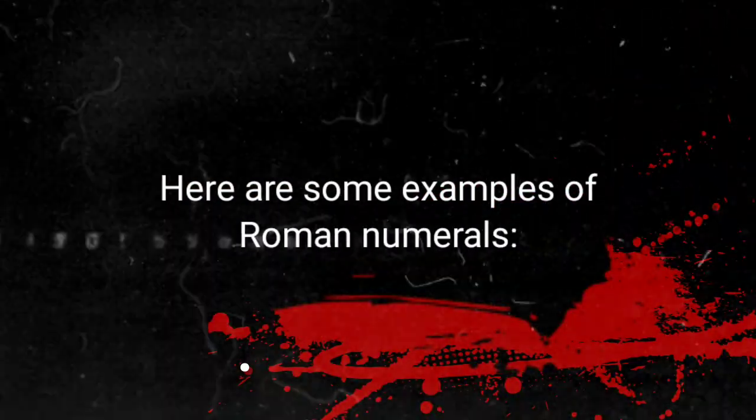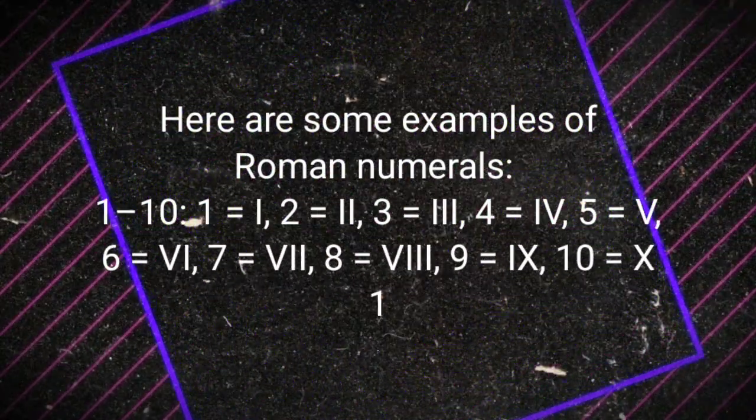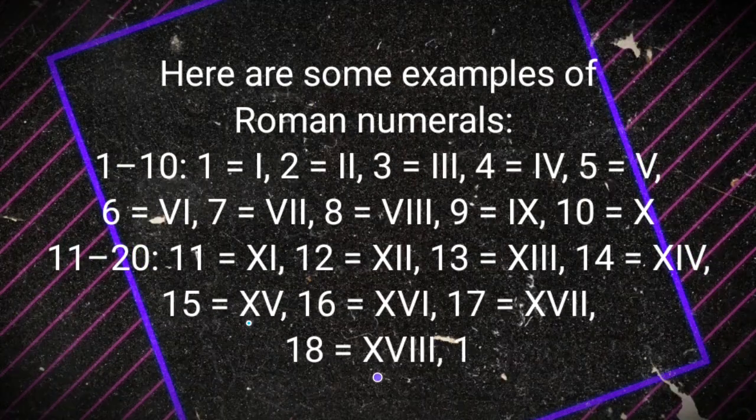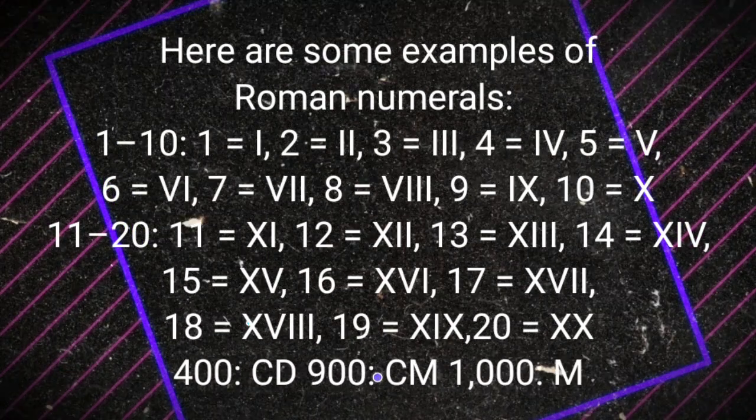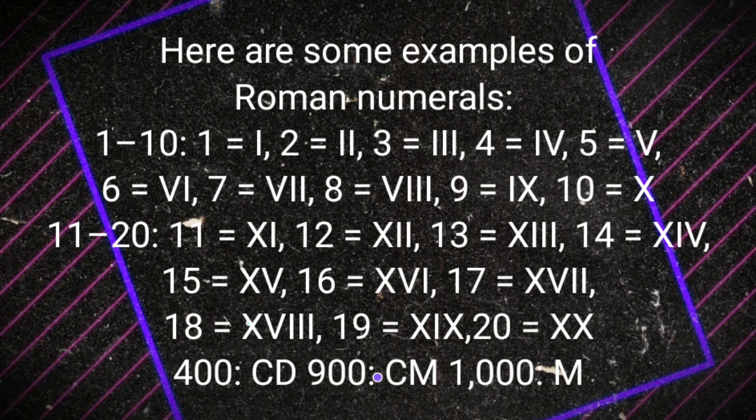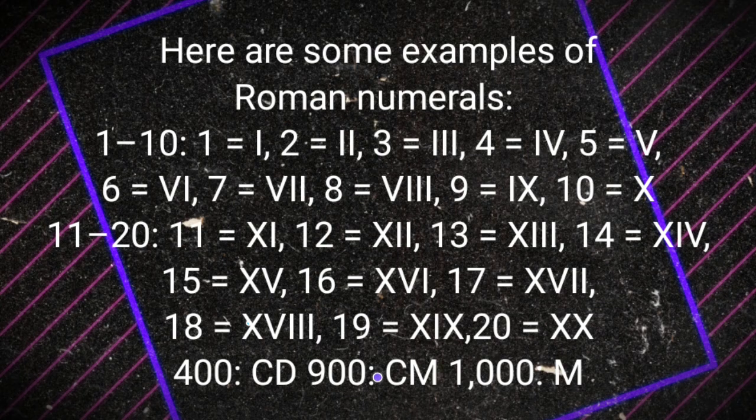Here are some examples of Roman numerals. 1-10: 1 = I, 2 = II, 3 = III, 4 = IV, 5 = V, 6 = VI, 7 = VII, 8 = VIII, 9 = IX, 10 = X.